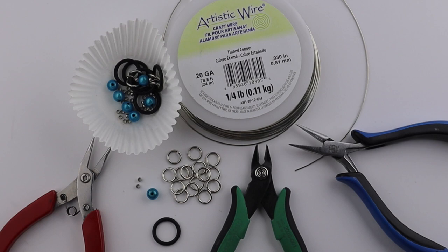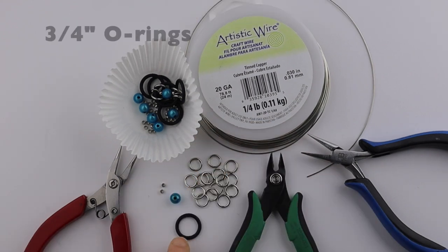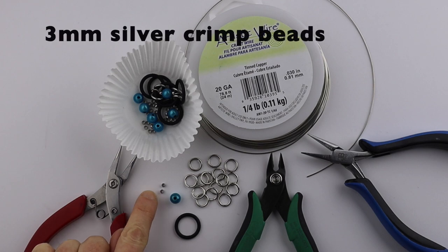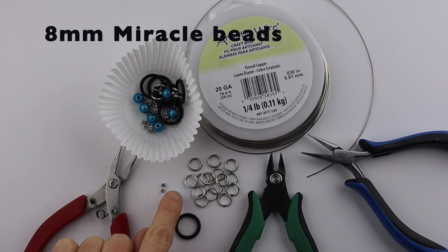What you're going to need for this project are your tools. I'm using 20 gauge tinned copper wire, but you can use any wire. The O-rings I'm using are three-quarter inch. I'm using 10 millimeter jump rings, 3 millimeter metal crimp beads, and 8 millimeter miracle beads.